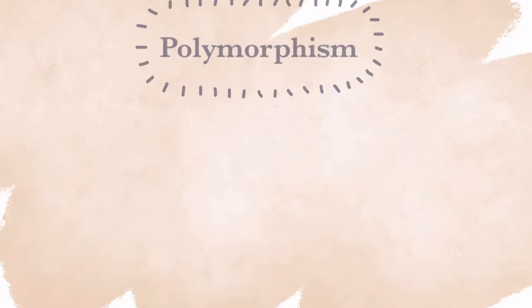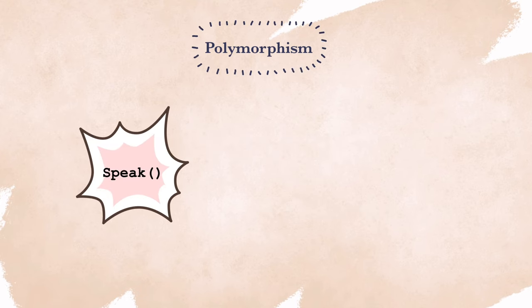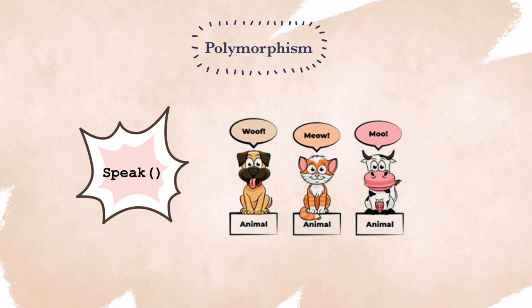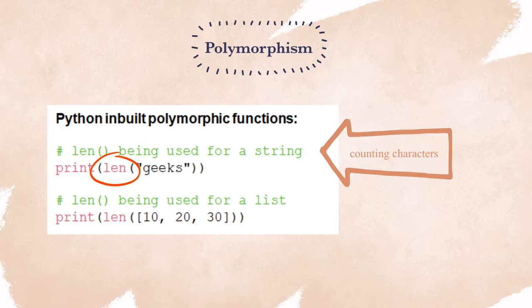The last principle of OOP is polymorphism. 'Poly' means many, and 'morphosis' means to form or to shape. It basically refers to the ability of a function to perform in different ways. A simple example of a polymorphic function in Python is the length function.